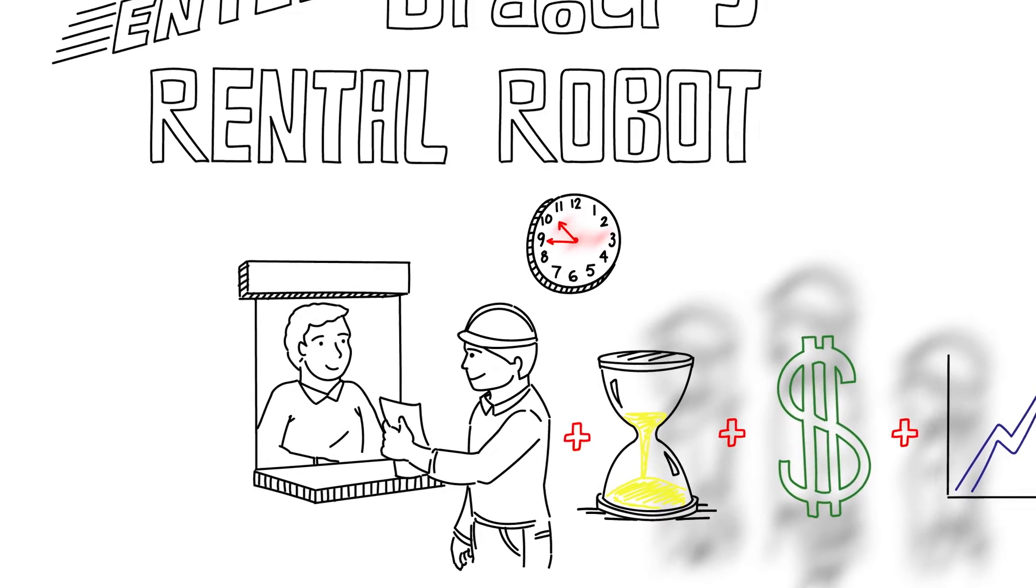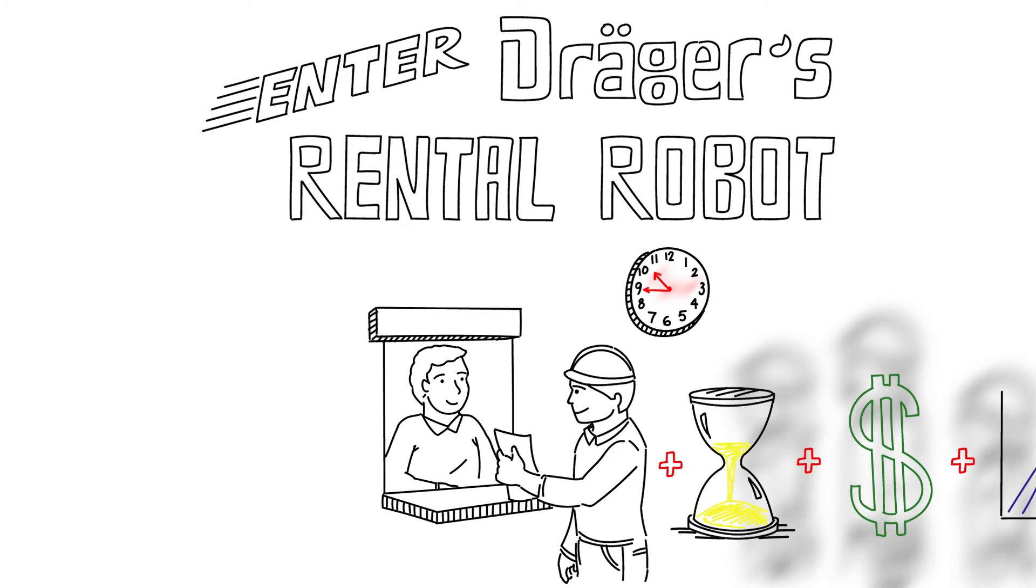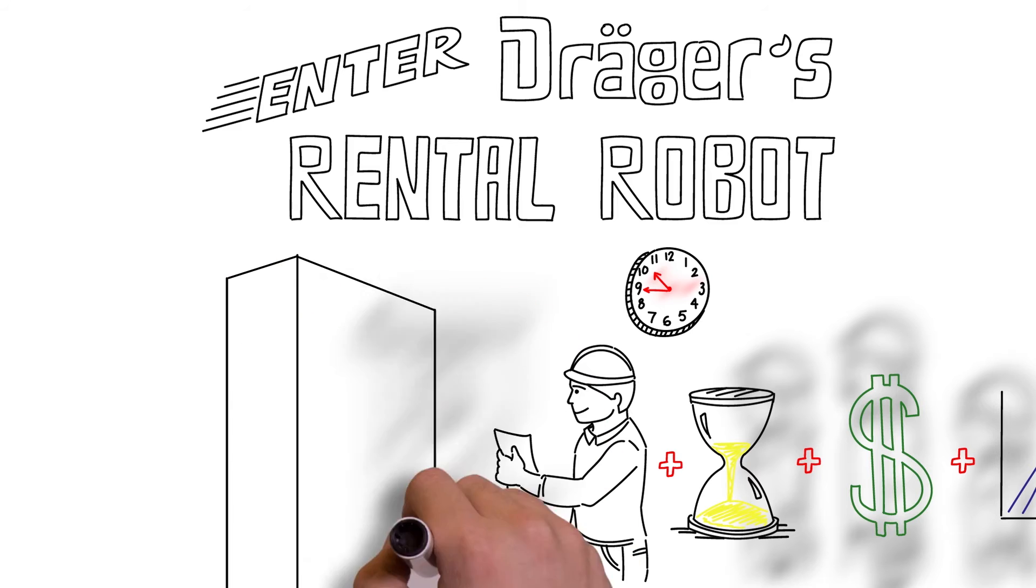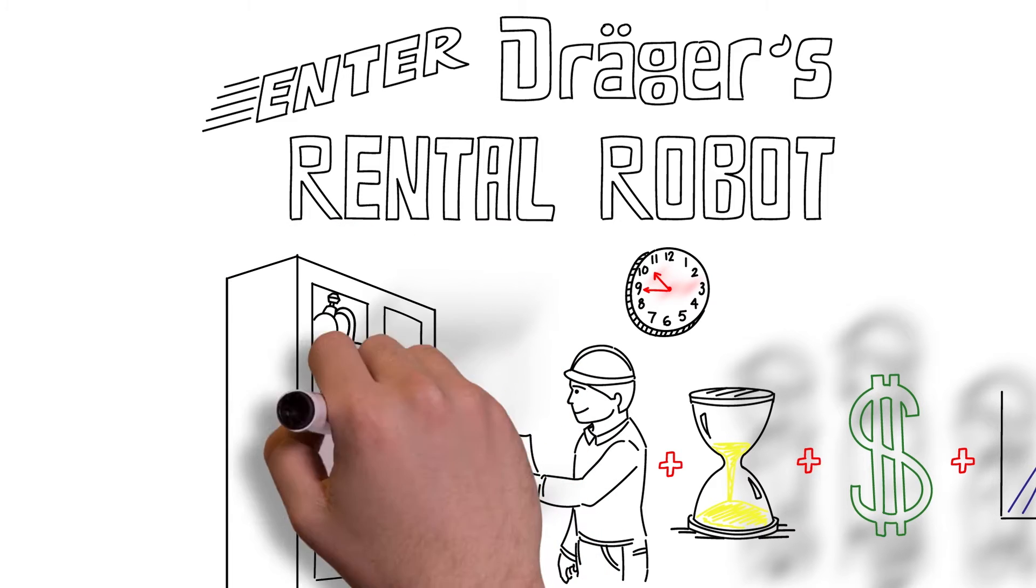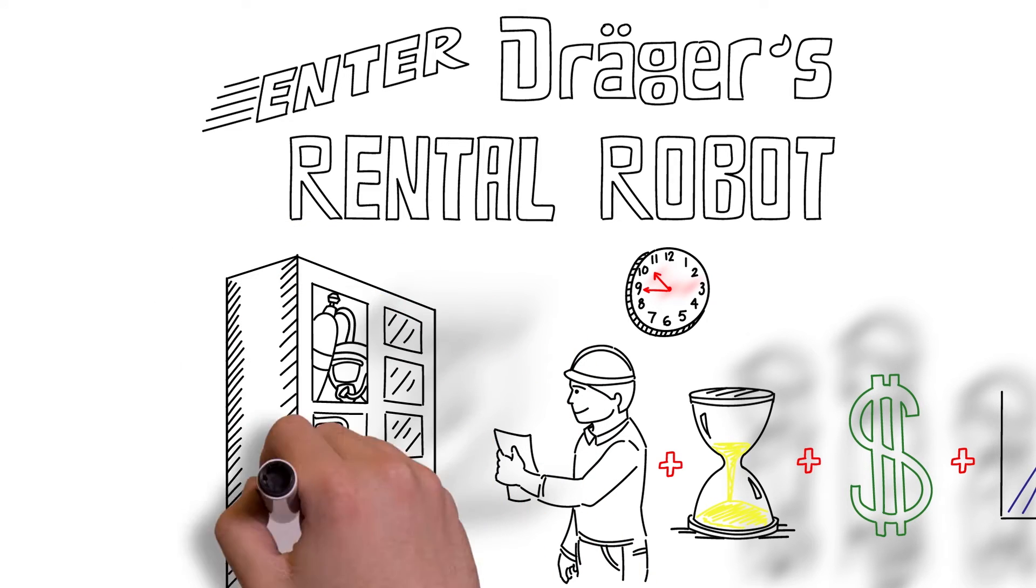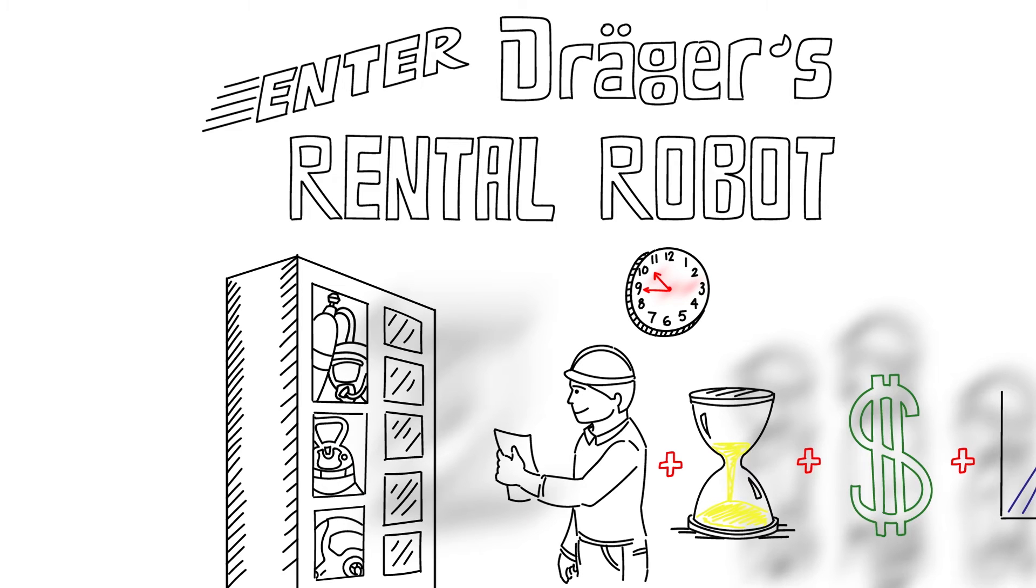Enter Draeger's Rental Robot. An intuitive and completely customizable system that helps to optimize efficiencies and on-site safety, Draeger's Rental Robot provides workers on-demand access to fully serviced equipment, from gas detectors to masks, at central supply points throughout a facility.